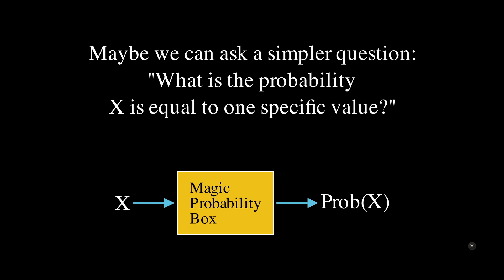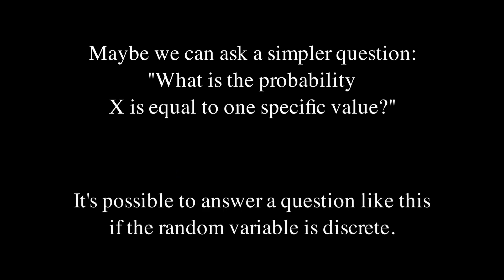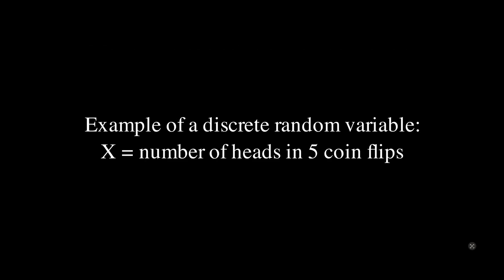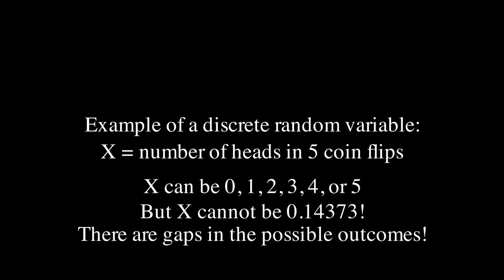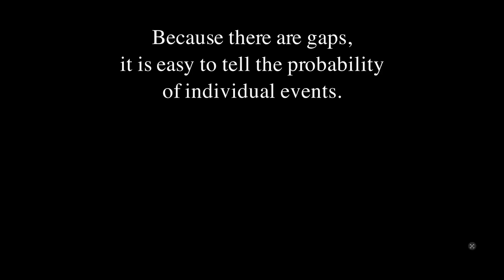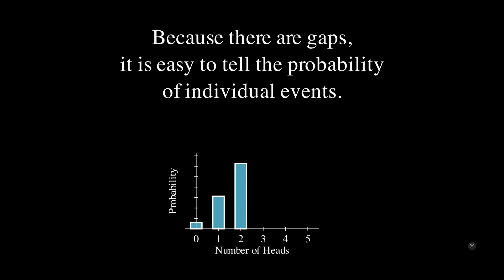What is the probability that X is equal to one specific value? It is possible to answer a question like this if the random variable is discrete. An example of a discrete random variable is something like the number of heads in five coin flips — this can be 0, 1, 2, 3, 4, or 5, but it cannot be a decimal number like 0.14373. There are gaps in the possible outcomes, and this is what it means to be discrete. Because there are gaps, it is very easy to tell the probability of individual events. We can see in a graph the probability of each possible outcome when flipping five coins.